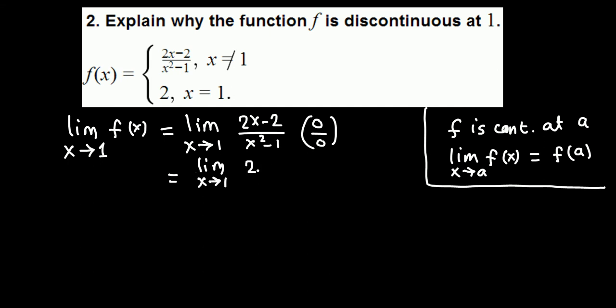The top is 2x minus 2. We can pull 2 out, so we get 2(x minus 1). On the bottom we have x squared minus 1, which is a difference of two squares, so we can write (x plus 1) times (x minus 1). Then we cancel x minus 1 from top and bottom.